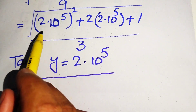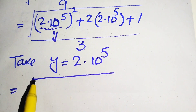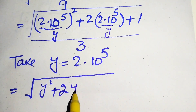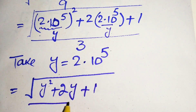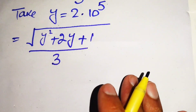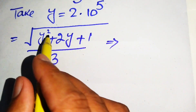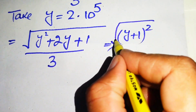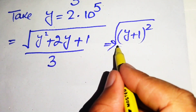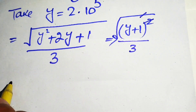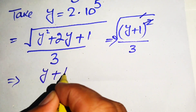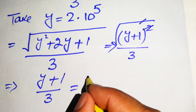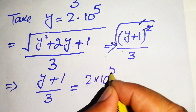Taking the square root of 10 raised to power 5, we substitute this value as y. So the expression becomes y squared plus 2y plus 1, divided by 3. If you look at this expression, this is the whole square of y plus 1, because y plus 1 whole squared equals y squared plus 2y plus 1. Divided by 3, the square root and square cancel, giving us y plus 1 divided by 3. The value of y is 2 multiplied by 10 raised to power 5, so we write it as 2 times 10 raised to power 5 plus 1, divided by 3.